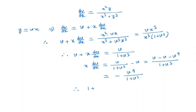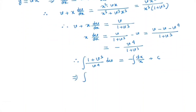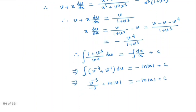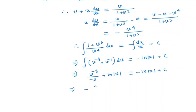Separating variables, we get (1 + v³)/v⁴ dv equals minus dx/x. On the left hand side we have v⁻⁴ plus v⁻¹ dv. Integrating both sides and back-substituting v = y/x, we get y³/(3x³) plus ln(y/x) is equal to minus ln(x) plus c.